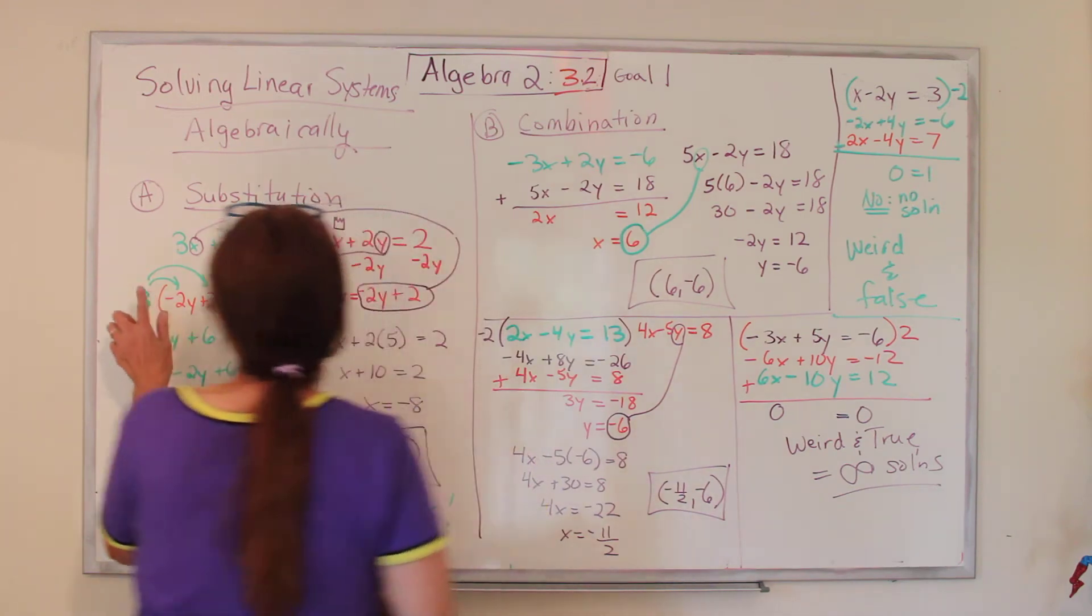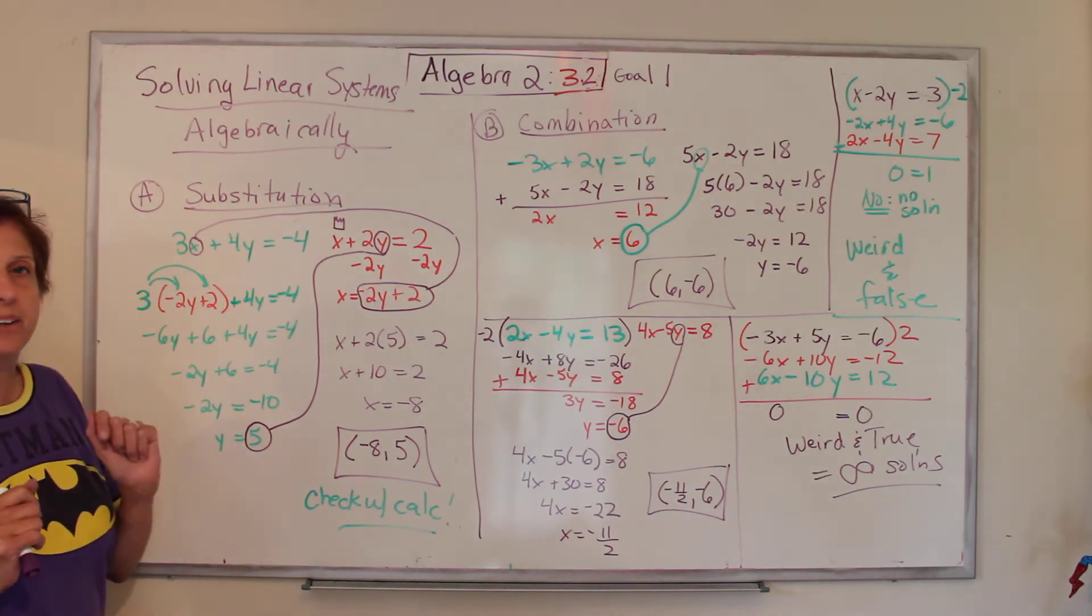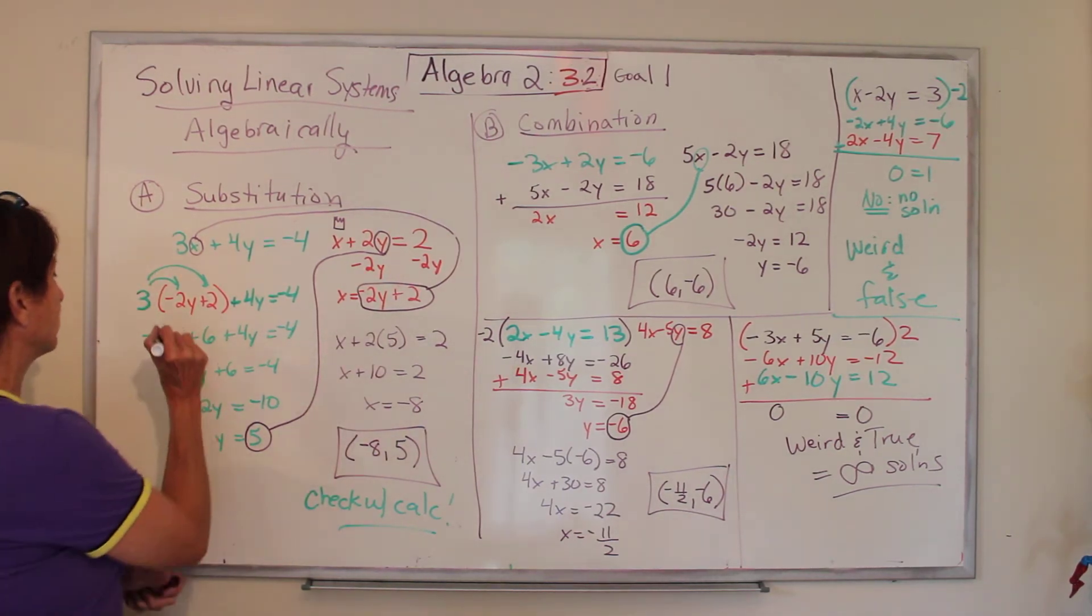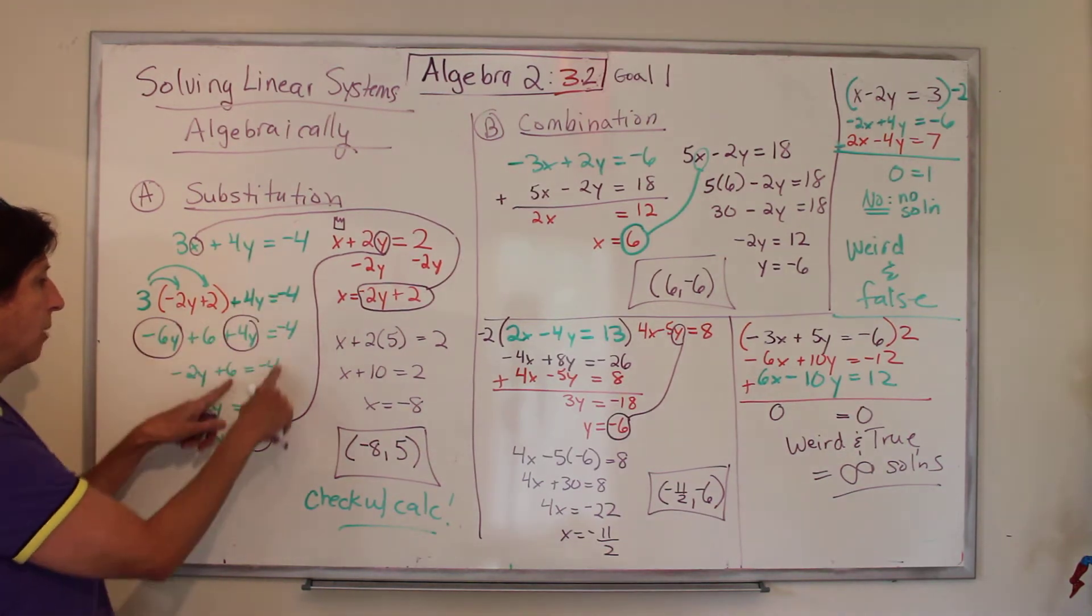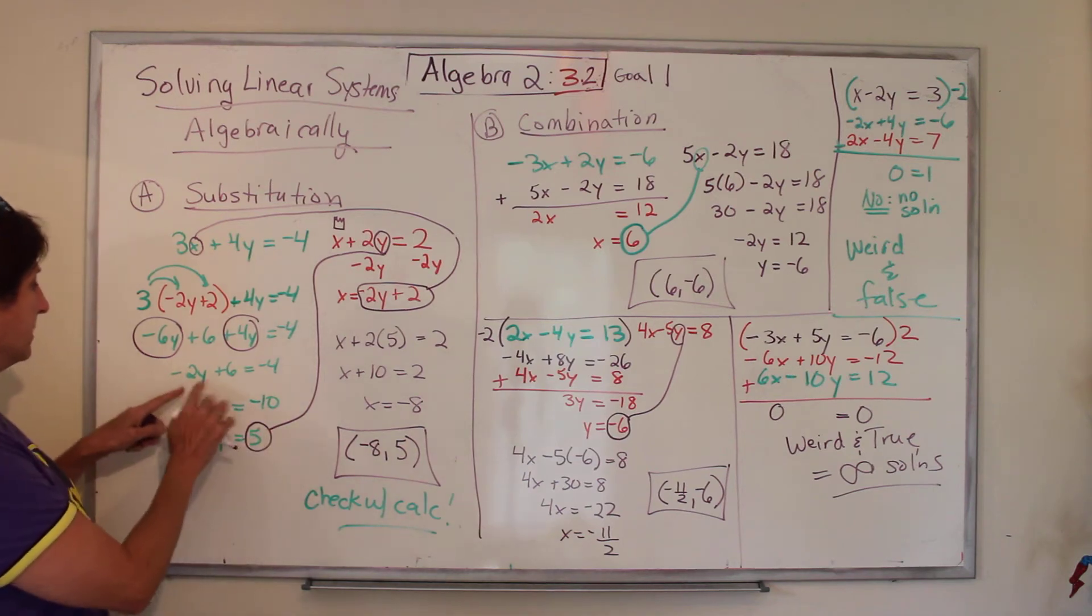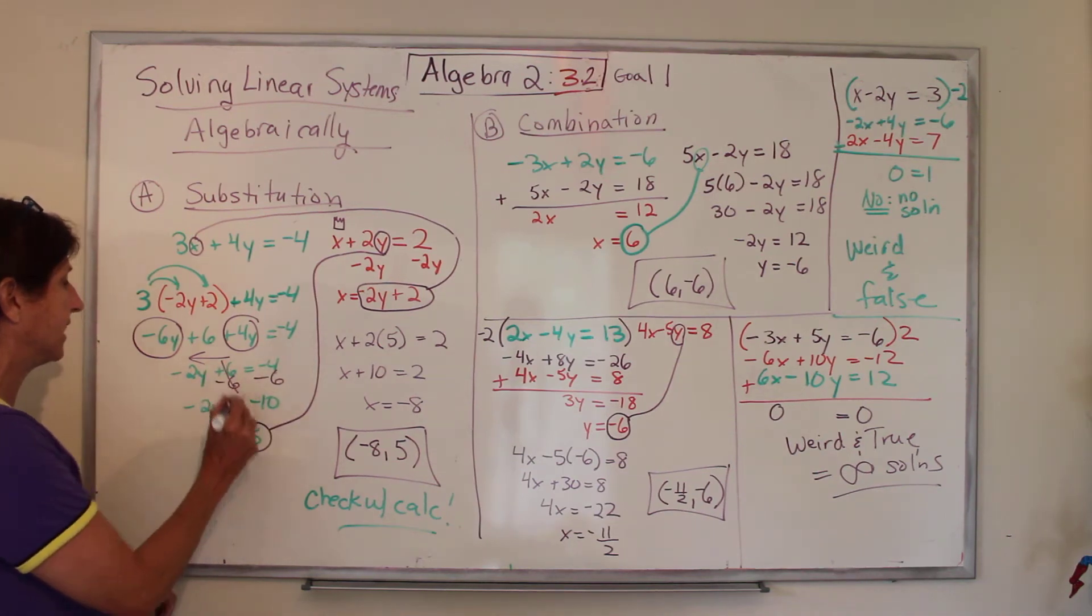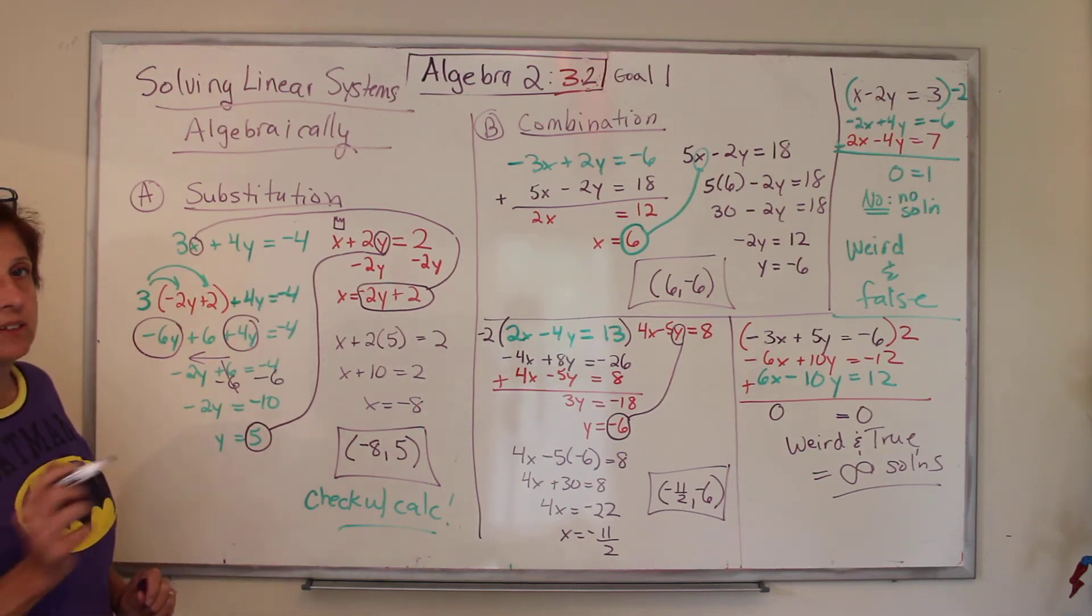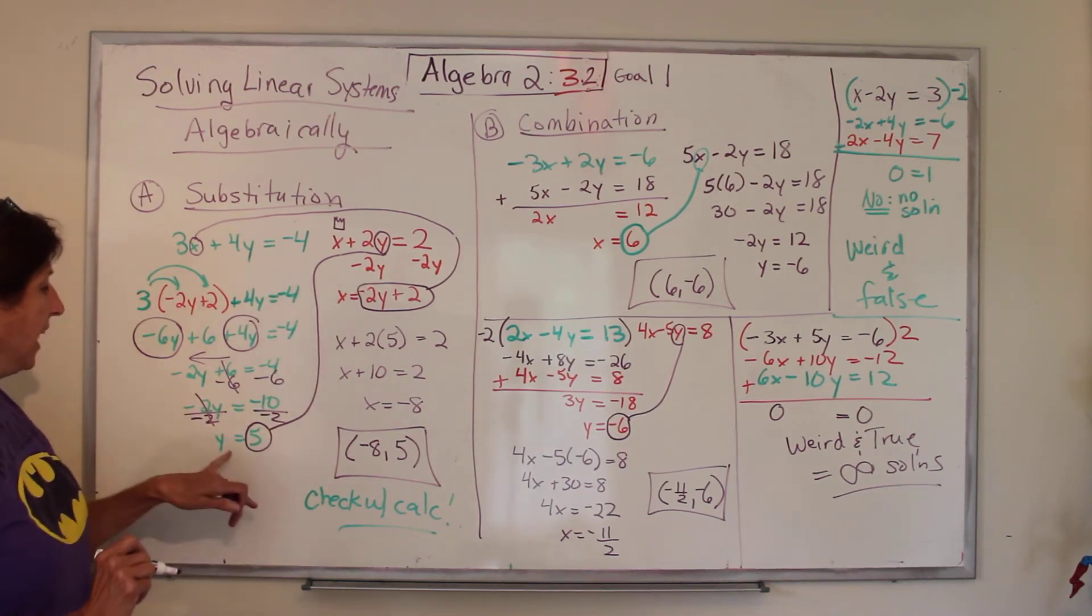So now I use the distributive property, 3 times negative 2Y is negative 6Y, 3 times 2 is 6. Now what do I do? I sing, I dance, gathering up your terms. I need to gather up my Ys. So I circle my Ys, and I gather them together. Negative 6Y plus 4Y is negative 2Y. I bring down what I didn't mess with. Now I can finally ask my question, why is Y not alone? Because it's got a 6 and a 2. I work from the outside, so I do minus 6 to both sides. Those cancel out. Negative 4Y minus 6Y is negative 10. Bring down what I didn't mess with. Why is Y not alone? It's being multiplied by a negative 2. So I divide both sides by negative 2. Those cancel out, and I get Y equals 5.